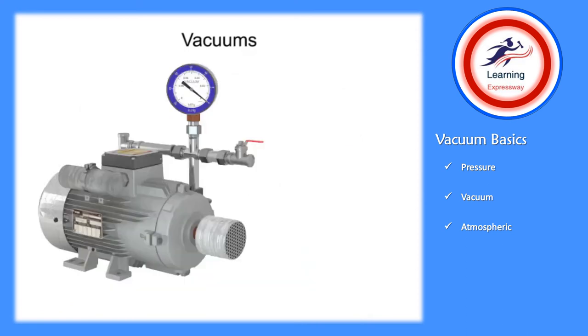Additionally, vacuum chucking is a commonly used method to hold workpieces in place without the risk of damaging their surface. In this application, a piece of wood is held to a lathe so that it can be turned. New applications for the use of vacuum power will continue to grow as technology advances.